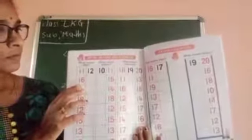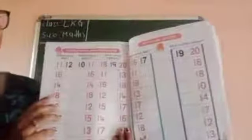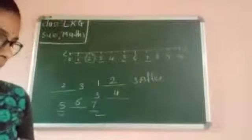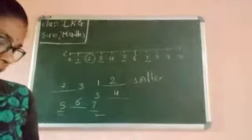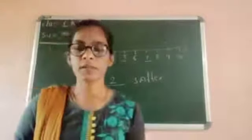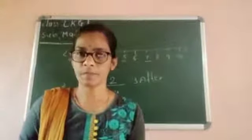Look at here. I will revise once again — after, before, and between. This is the after number, and this is the before number. This is your homework children. Today's class is completed. Next class I will tell you the next chapter. Thank you.